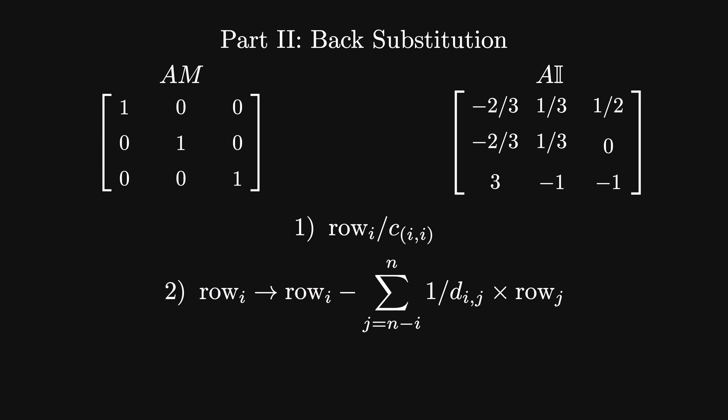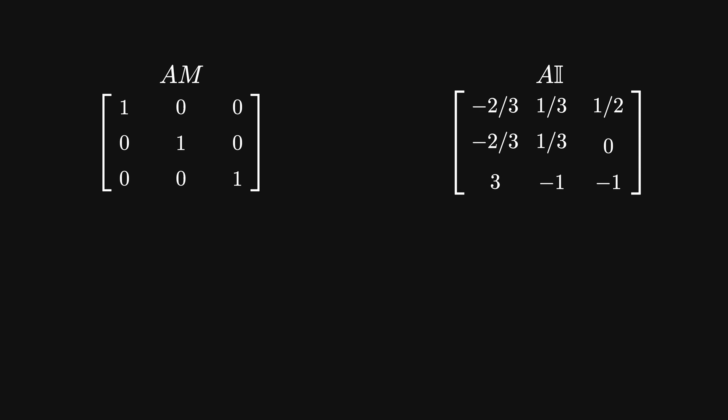In general, I replace row i by row i minus the sum from j equals n minus i to n of d(i,j) times row j. And this completes the algorithm for Gauss-Jordan elimination. This has converted the matrix on the left to the identity and the matrix on the right to the inverse of M.